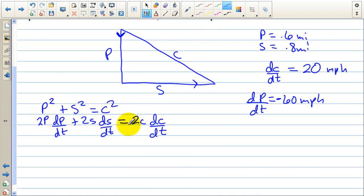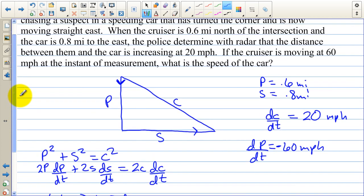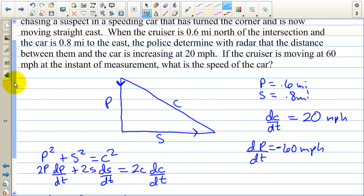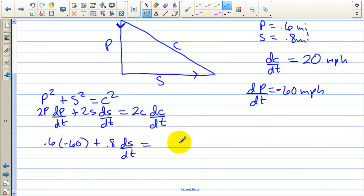Now we start plugging in values once I've taken the derivative. So P is 0.6, DP DT is negative 60. Plus the S is 0.8, and DC DT, well, I don't know DS DT. They want to know how fast the suspect is going. What is the speed of the car? In other words, the suspect. And that's equal to, well, I don't know what C is, but I sure can find it. And that's going to be times 20.